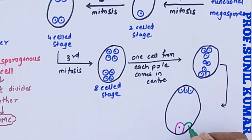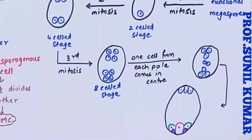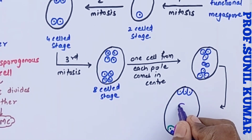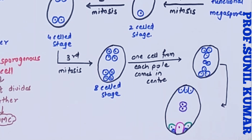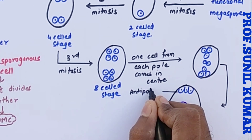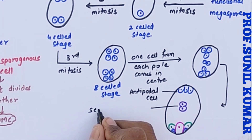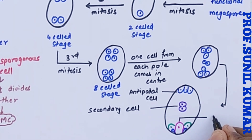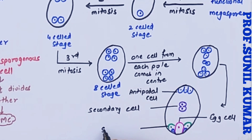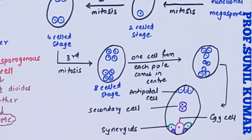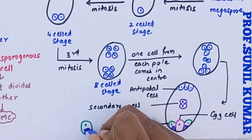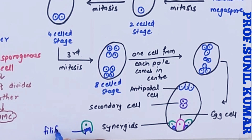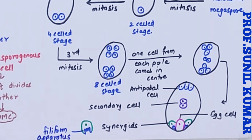The antipodal cells are haploid and are positioned towards the chalazal end. Towards the micropyle end, the middle cell is the egg cell, and surrounding the egg cell are the synergids. Inside the synergids there are finger-like projections called the filiform apparatus. In the center, the two cells have their cytoplasm (protoplasm) fused but not the nuclei, making that middle cell diploid (2n) as it contains two nuclei.